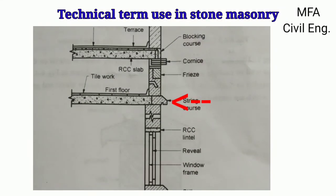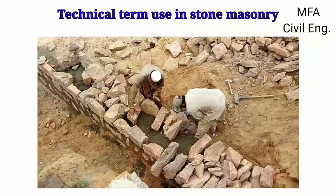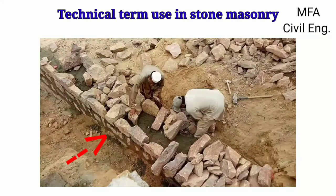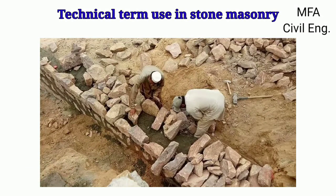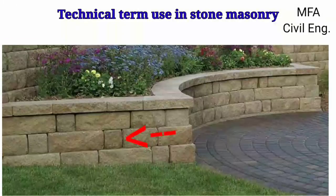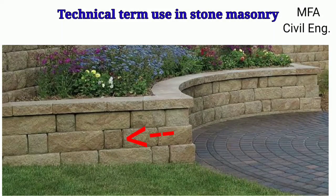The horizontal course provided at a suitable level between the plinth and the cornice is termed the string course. The horizontal course provided to strengthen the wall of irregular small stones is called the lacing course. The stone chips used for packing and filling the voids of stone masonry are called spalls. The arrangement of stones to overlap each other in such a manner that no continuous vertical joint occurs either on the face or inside the wall is called the bond.